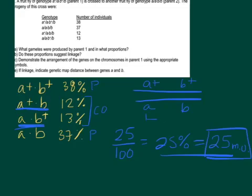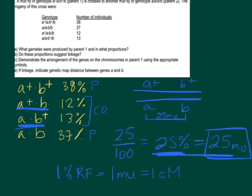So we would say A and B are 25 map units away from each other. One percent recombination frequency equals one genetic map unit. Alternatively, instead of using map units, sometimes people use centimorgans — they're all the same thing. So if it's 25% recombination, that means they're 25 map units apart. So now we've answered all the questions. Thank you.